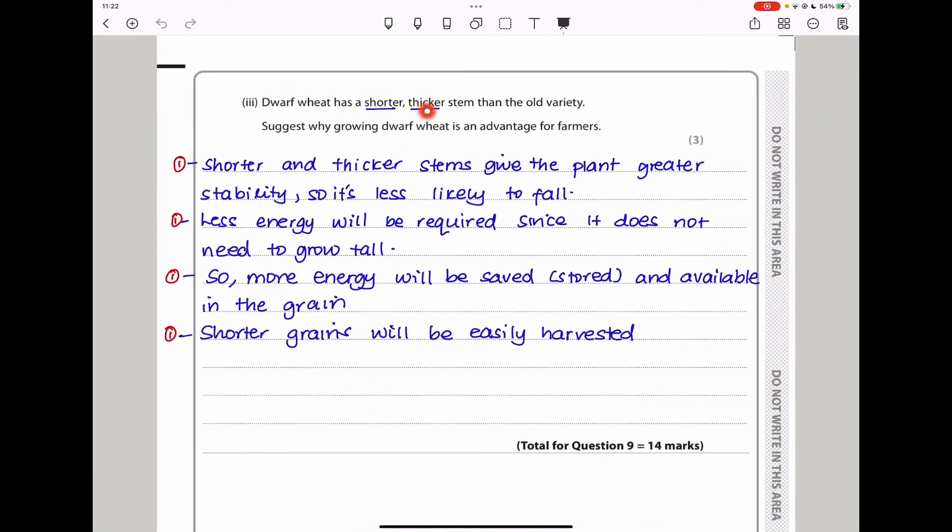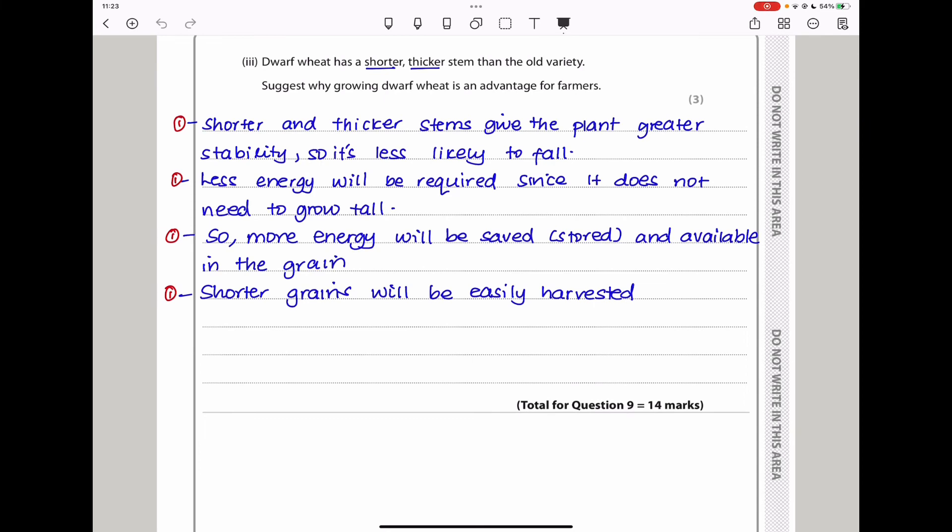Here they say dwarf wheat has a shorter, thicker stem than old variety. They want us to suggest why growing dwarf wheat is an advantage for farmers. They have shorter stems. It means they are not going to become longer. So the energy they would have used to become longer is going to be stored and used for something else. And also, being thicker, it means they are going to be stable. So they are short and thick. They cannot be easily destroyed by winds. I say, shorter and thicker stems give the plant greater stability, so it is less likely to fall. Less energy will be required since it does not need to grow tall. So more energy will be saved or stored and available in the grain. And the shorter grains will be easily harvested.